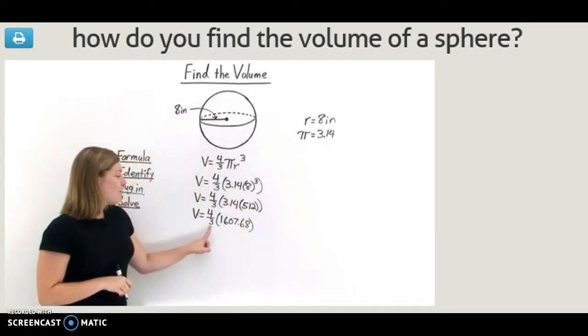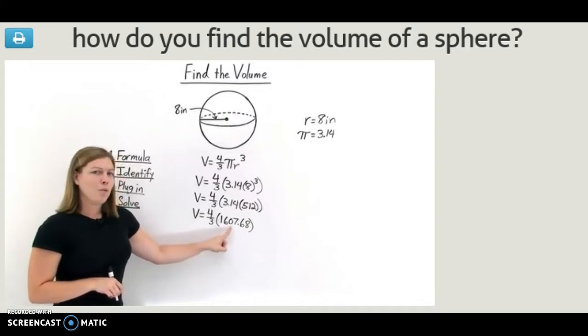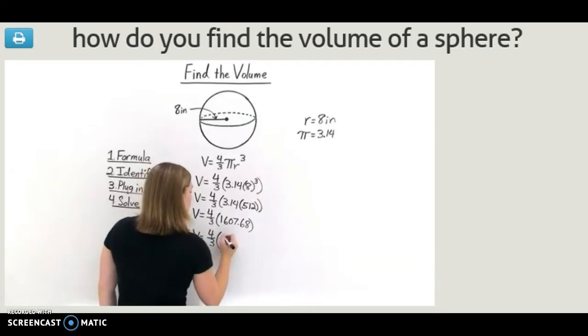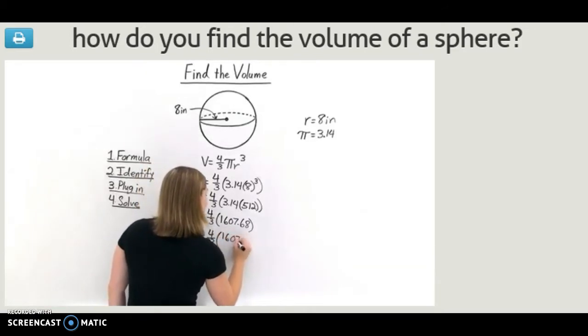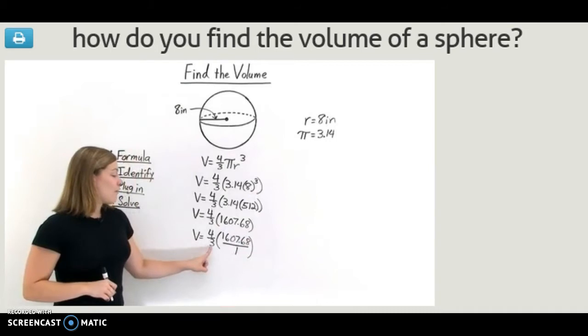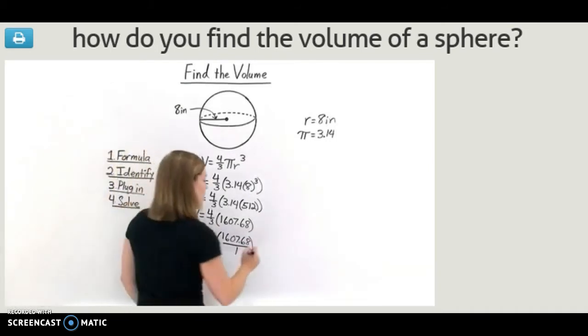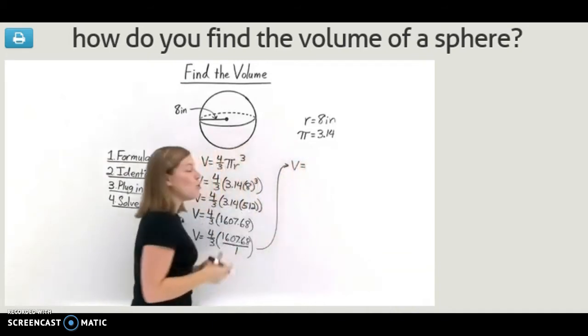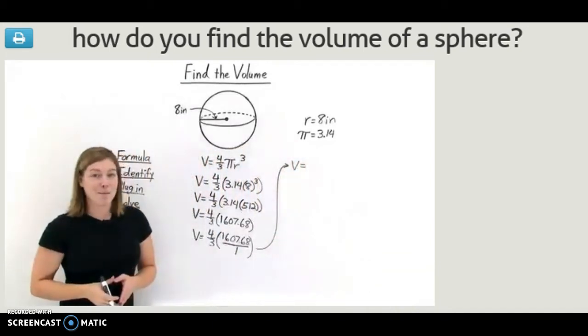Now we have a fraction times a number. Let's turn this number into a fraction as well to make this a little easier. So we have 4 thirds, and then here we'll have 1,607.68 over 1, turning this number into a fraction. Now we have a fraction times another fraction. To multiply two fractions together, we need to multiply the numerators together, then multiply the denominators together.